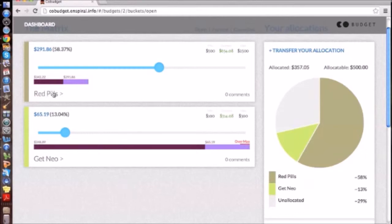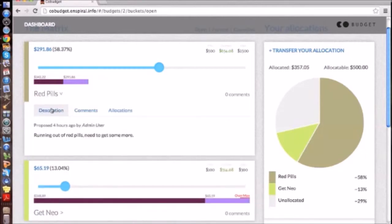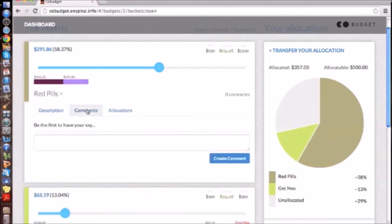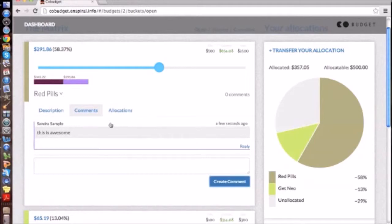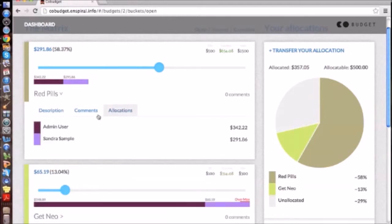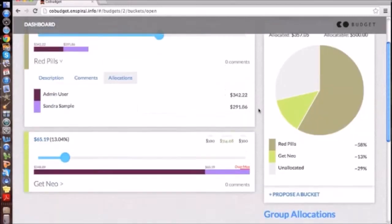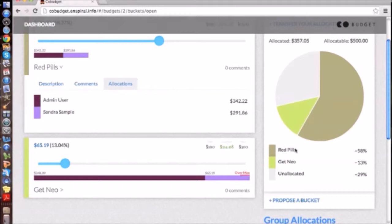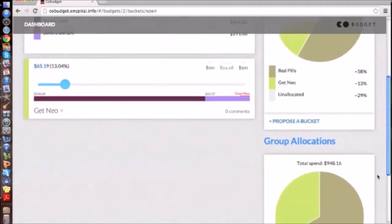Now I can drill down into each bucket to see what it is. I can see a description. I can also make comments. And I can also view the allocations of who has made what. So I can actually see who has made allocations into this bucket. I can see that for me, I've allocated 58% of my budget, of my personal allocation, into red pills, 13% into get new, and then I haven't allocated 29% of it.